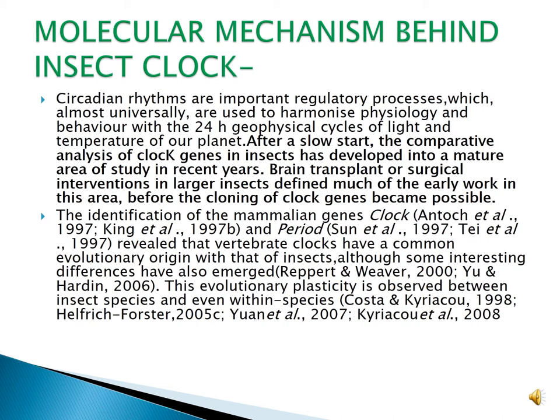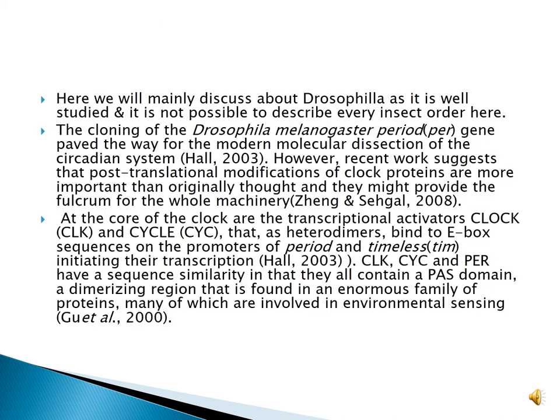Although some interesting differences have also emerged, this evolutionary plasticity is observed between insect species and even within species. Here we discuss Drosophila as it is well studied. The cloning of the Drosophila melanogaster period gene paved the way for the modern molecular dissection of the circadian system. At the core of the clock are the transcriptional activators Clock (CLK) and Cycle (CYC), which as heterodimers bind to E-box sequences on the promoters of period and timeless genes, initiating their transcription.